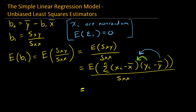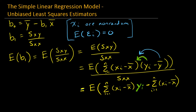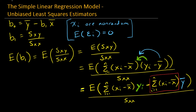We can distribute that y term, so this equals the expected value of the sum from i equals 1 to n of (x sub i minus x-bar) times yi, divided by Sxx. The sum of (x sub i minus x-bar) from i equals 1 to n equals 0, so the y-bar term drops out.